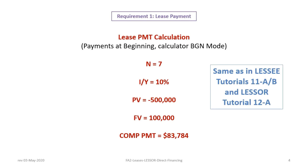The lease payment is always calculated by the Leasor. In our example, payments are at the beginning of the period, so make sure your calculator is in begin mode. We have a 7-year lease, the Leasor's rate is 10%, the present value of the asset is $500,000 entered as the opposite sign of the future value, and the residual is $100,000. Computing the payment gives $83,784.